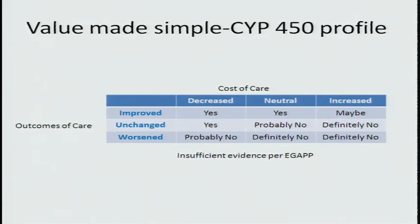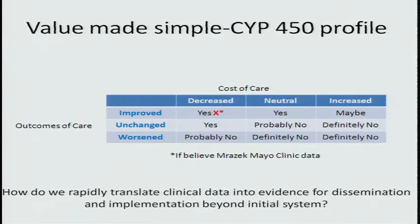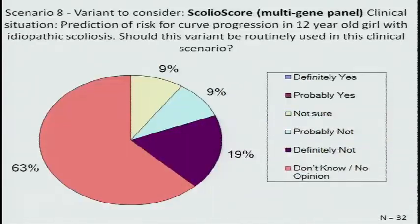If we were to approach this matrix, we'd say we can't put an X in the box because we have insufficient evidence, at least per EGAP. However — spoiler alert — Dr. Mrazek is going to present some data tomorrow which I think is very intriguing. If you believe the Mayo Clinic experience, then we may in fact be up in the improved outcomes area. The question that raises is how do we rapidly translate clinical data into evidence for dissemination and implementation beyond the initial system? If it works at the Mayo Clinic, how can we make sure that evidence is generalizable? That idea of needing real-world methodologies came up in several talks.